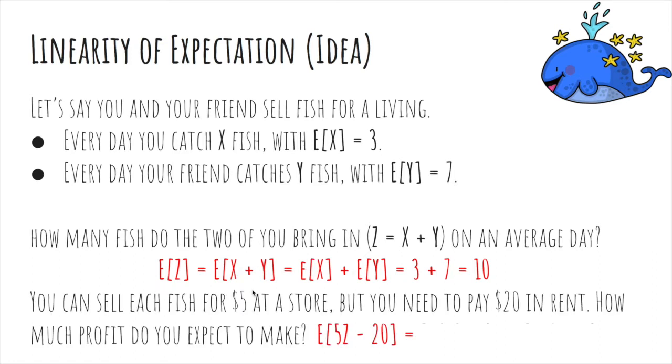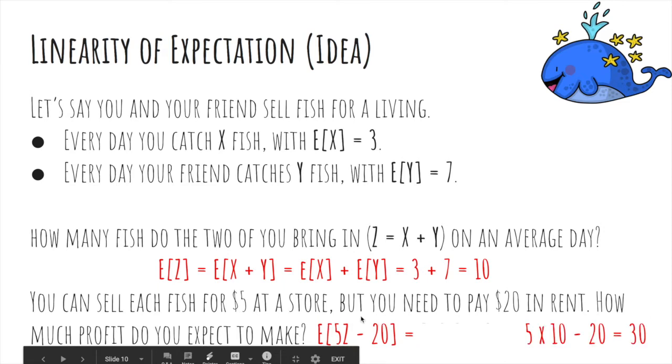Furthermore, let's say you can sell your fish for $5 at a store, but you need to pay $20 in rent. How much profit do you expect to make? Well, the profit you expect to make is 5 times the number of fish minus 20. That's the profit, and then you take the expected value. And it turns out you can actually just do 5 times 10 minus 20, because expectation also happens to work nicely with linear functions.